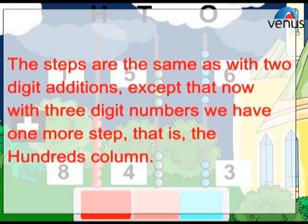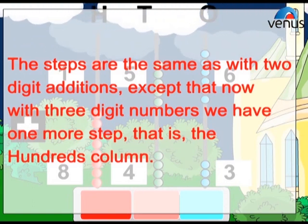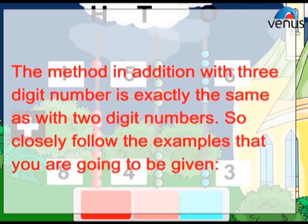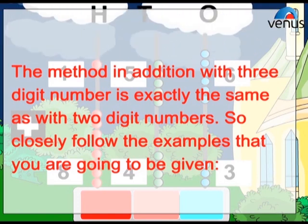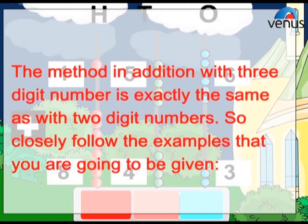Except that now with three-digit numbers we have one more step—that is the hundreds column. The method in addition with three-digit numbers is exactly the same as with two-digit numbers, so closely follow the examples that you are going to be given.